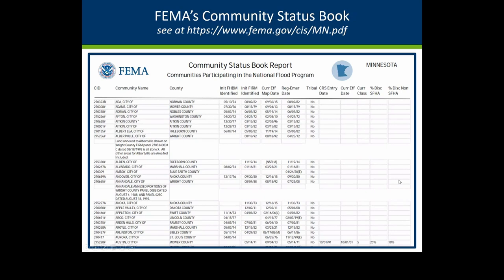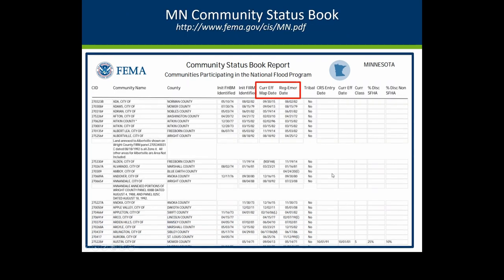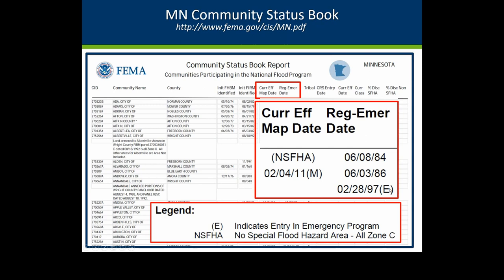To check if a community is enrolled, there's the FEMA Community Status Book, which lists communities alphabetically and shows the current effective map date and when they entered the regular or emergency program. The 'E' designation means maps are either non-existent or early emergency-type maps, meaning less flood insurance is available.